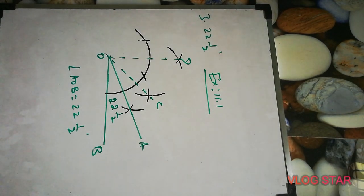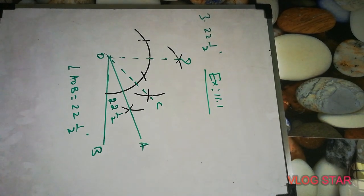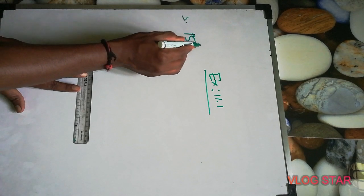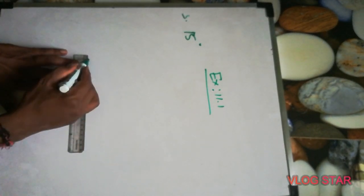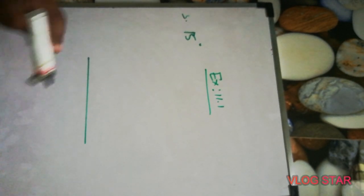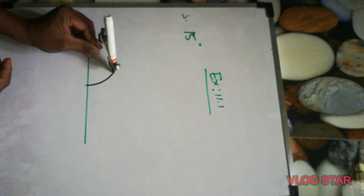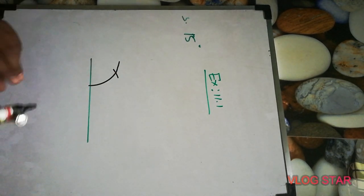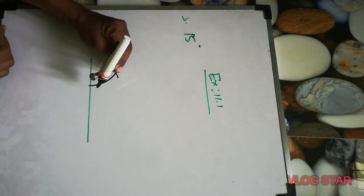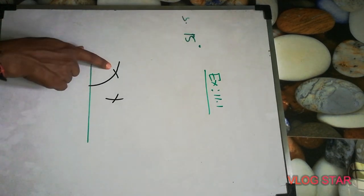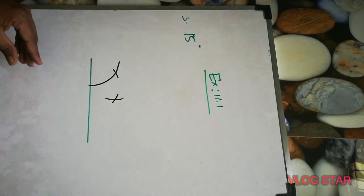The third part of question number three is 15 degrees. 15 degrees means we first draw 60 degrees, then halve it to 30 degrees, then halve again to 15 degrees. So first make 60 degrees — cut an arc, then from that point cut it again. Then to get 30, cut again from the arc and from the downside point. So this is 30 degrees.